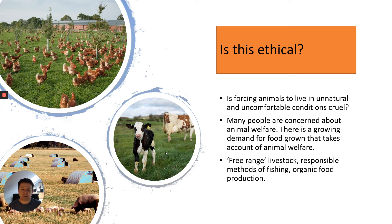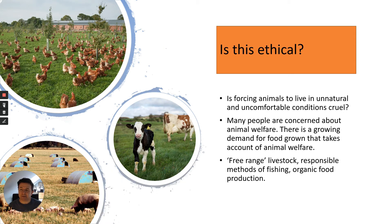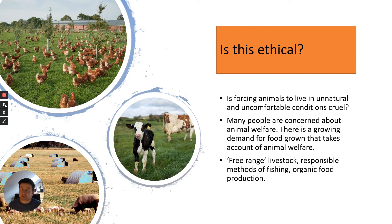Here's a cow — beef or perhaps dairy — out in a field, allowed to move around. And here are free-range pigs in the corner, exhibiting behaviors more like they naturally should. People are prepared to pay more money, particularly in the developed world, for these kinds of conditions for animals. So free-range livestock, responsible methods of fishing, and organic food production are all in demand.